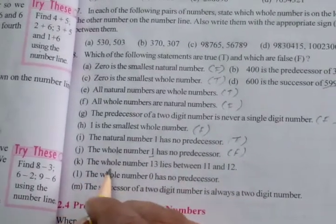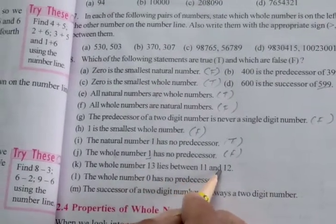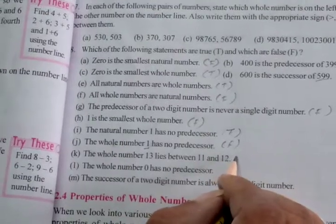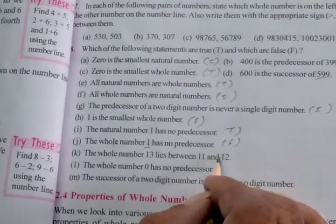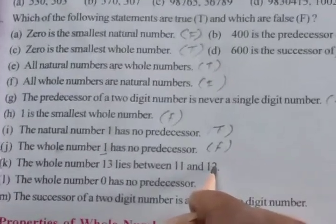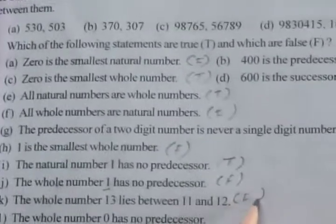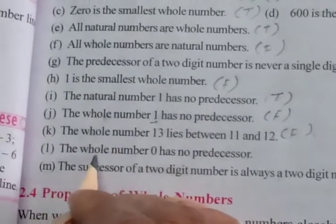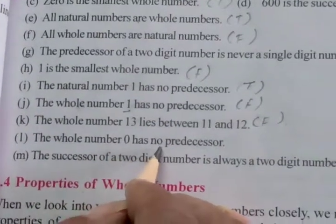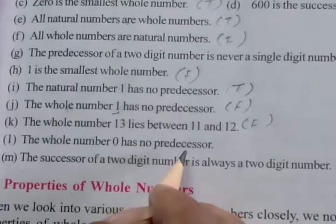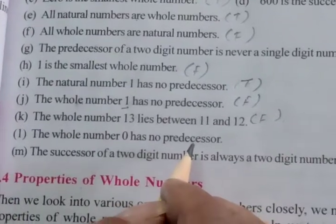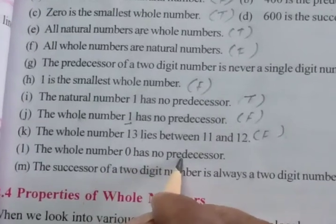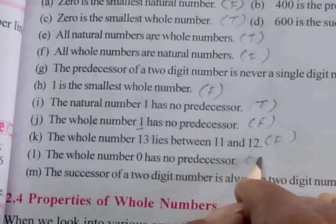Statement K: The whole number 13 lies between 11 and 12. No — 13 is lying after 11 and 12, so this is a false statement. Statement L: The whole number 0 has no predecessor. Yes, this is a true statement.